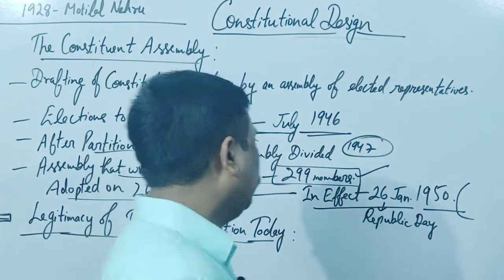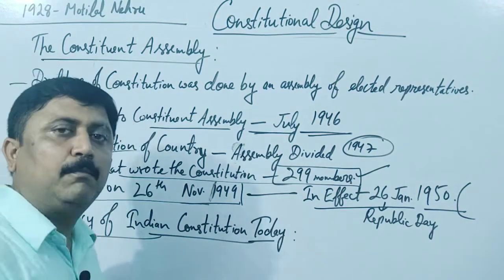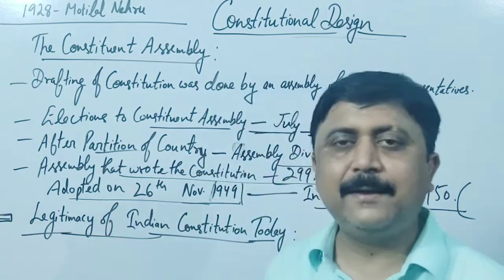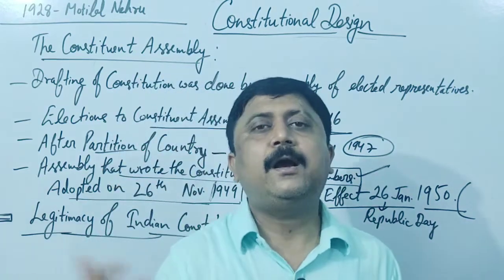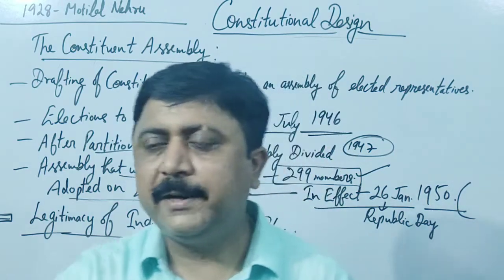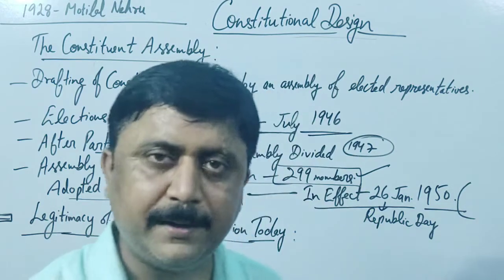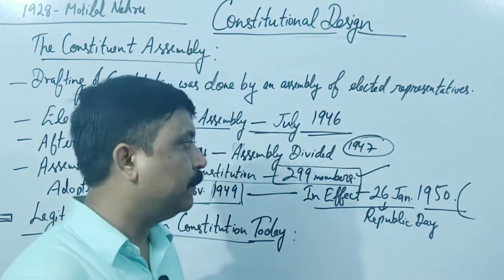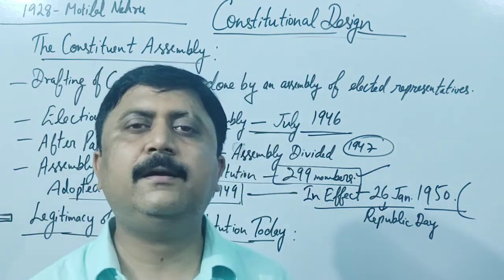That is why we celebrate 26 January as Republic Day. In this way, we came forward from the Constituent Assembly with very foresighted leaders. Of the 299 members, some were elected, some were nominated. Every committee, every caste committee had representation, so that no one's view would be left out — whether from minorities or majorities, every kind of person was included.